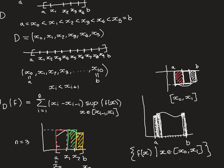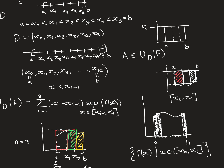An upper Riemann sum could actually equal the area under the curve. For a constant function taking value k over [a, b], no matter what dissection you take, the supremum is just k. So you multiply each interval length by k and add them all up, which obviously gives you the exact area under the curve. So upper Riemann sums always give an answer greater than or equal to the actual area A - for any dissection D of function f, the upper Riemann sum is always guaranteed to be greater than or equal to A.